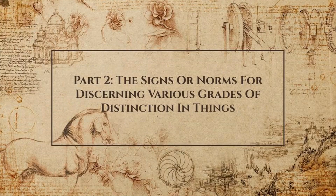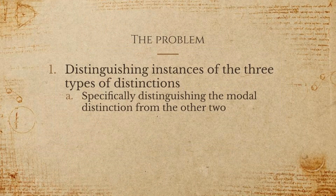Now we go to Part 2: the signs or norms for discerning various grades of distinctions in things. This covers how we know which distinction is taking place in the objects we're talking about. The problem is distinguishing instances of the three types of distinction — real, mental, and modal. Specifically, this is about distinguishing the modal distinction from the other two, because the modal distinction is the most subtle and the hardest to see.